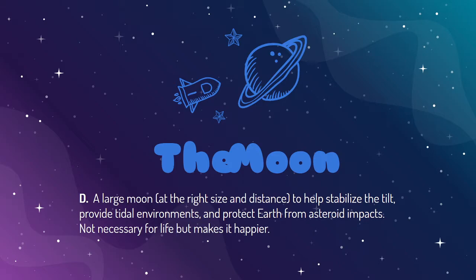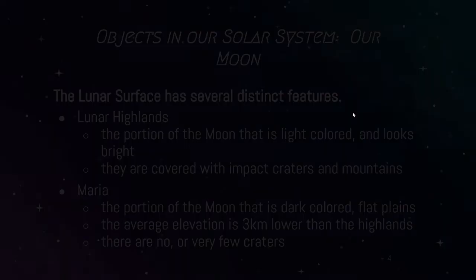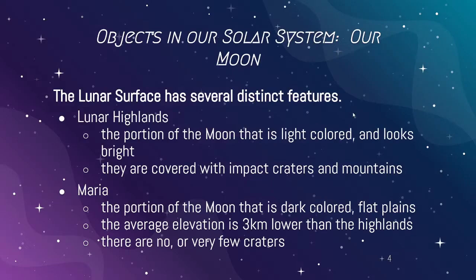Just like with Jupiter, the moon does protect us from asteroids. We think theoretically it's not 100% necessary to have a large moon, but we know it makes life more successful, especially when talking about the evolution of intelligent life. In today's activity you're going to look at some of the features you can see on the moon. There are two distinct colors: lighter areas called the lunar highlands, covered with craters and mountains.